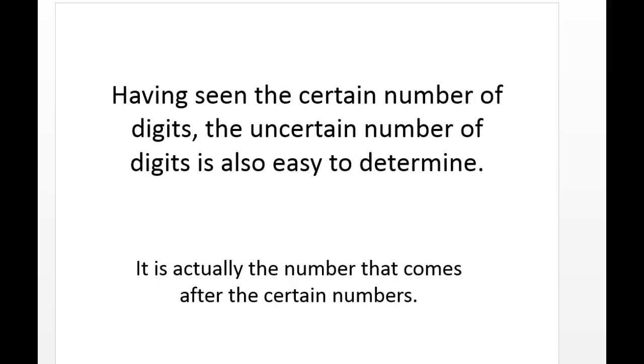Now having seen the certain number of digits, the uncertain number of digits is also easy to determine. It's actually the number that comes after the certain numbers. That's the number that everybody might not agree on. Why might they not agree? Because of perspective, for whatever reason - you might need glasses, or the glasses you're wearing might not be adequate, or you might be at a different angle than you're supposed to be.